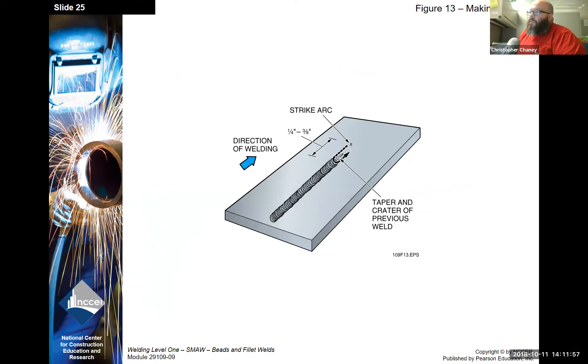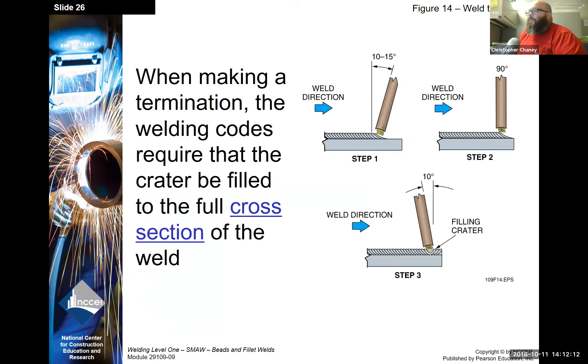Restarting. When we strike an arc to restart, we want to strike the arc quarter to three-eighths of an inch ahead of the weld and then come back towards the weld and start filling the bead in and get a good tie-in to the previous weld. When making a termination, the weld codes requires that the crater be filled to the full cross-section of the weld. Step one, you're welding towards the end. Step two, you kind of straighten up. Then in step three, you're actually starting to fill and come back to your original weld.